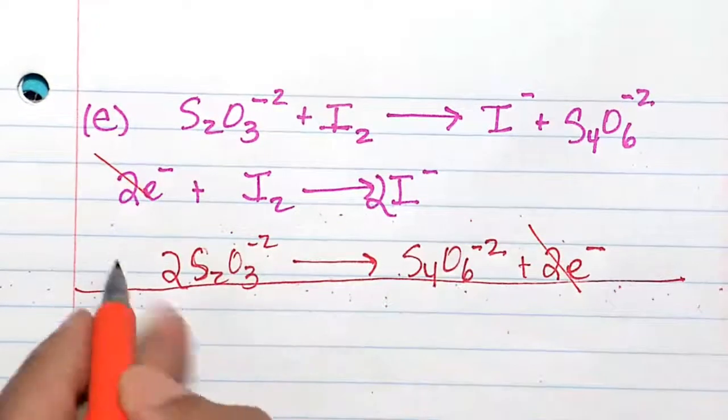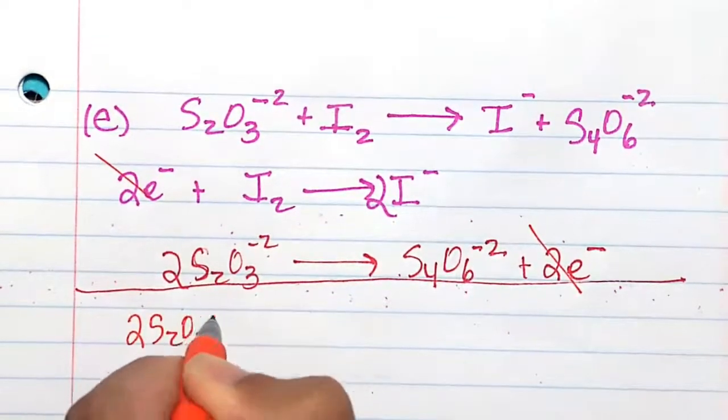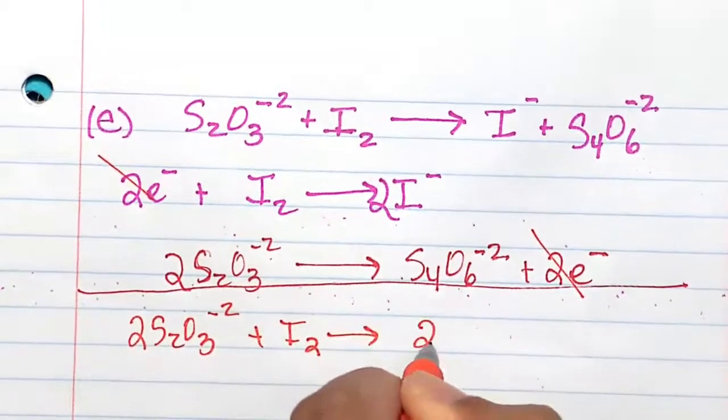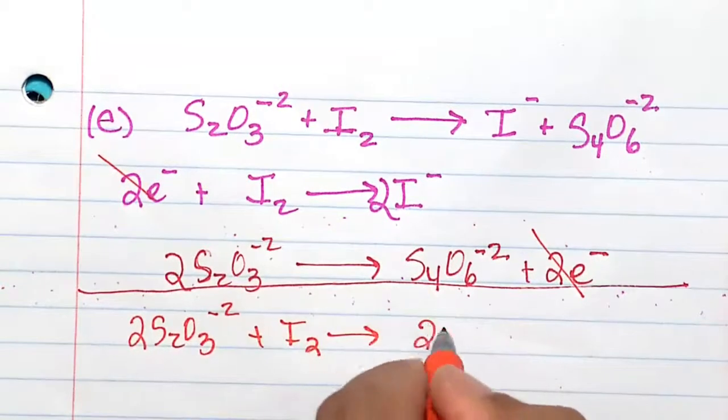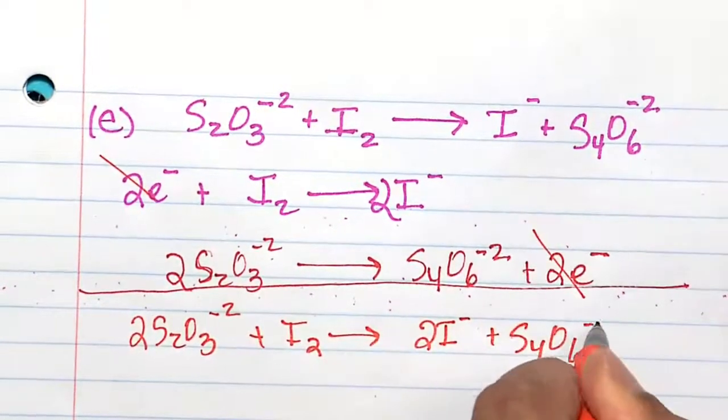2e- minus 2e- cancels, and the balanced chemical equation is 2S2O3^-2 plus I2 goes to 2I- plus S4O6^-2.